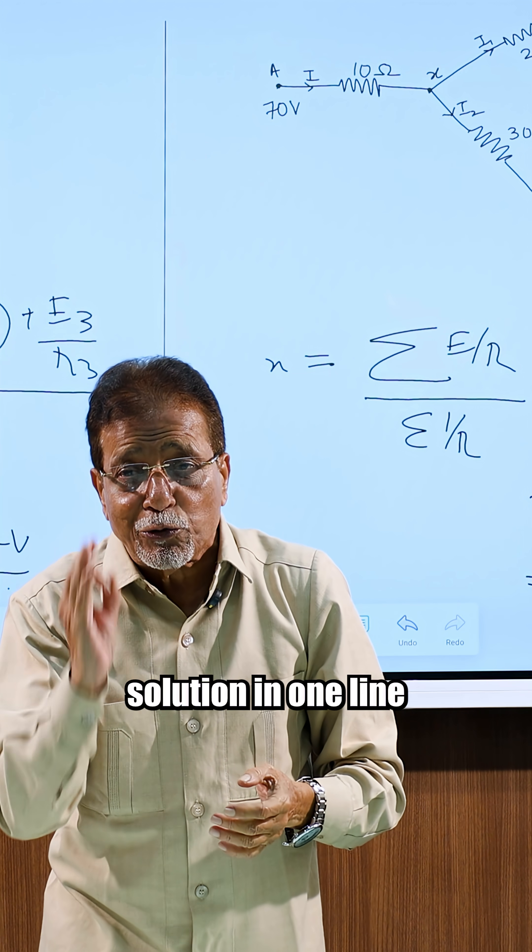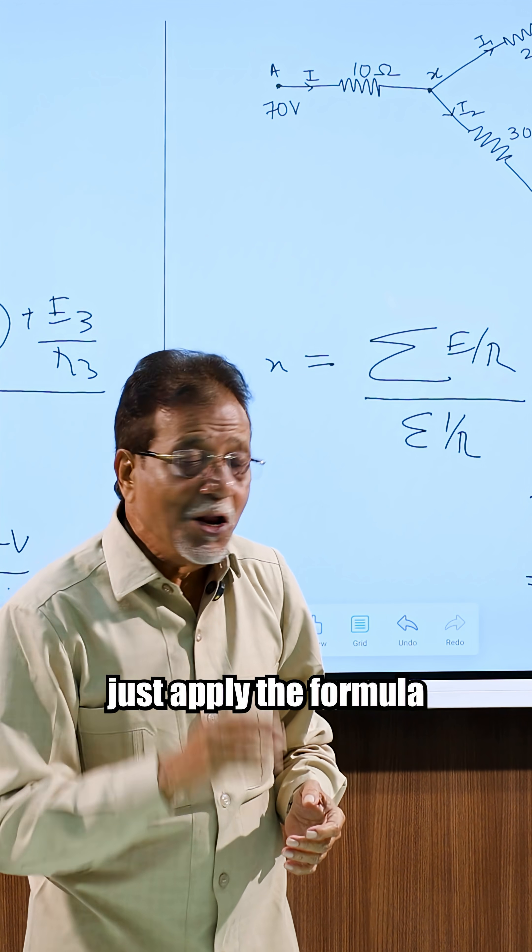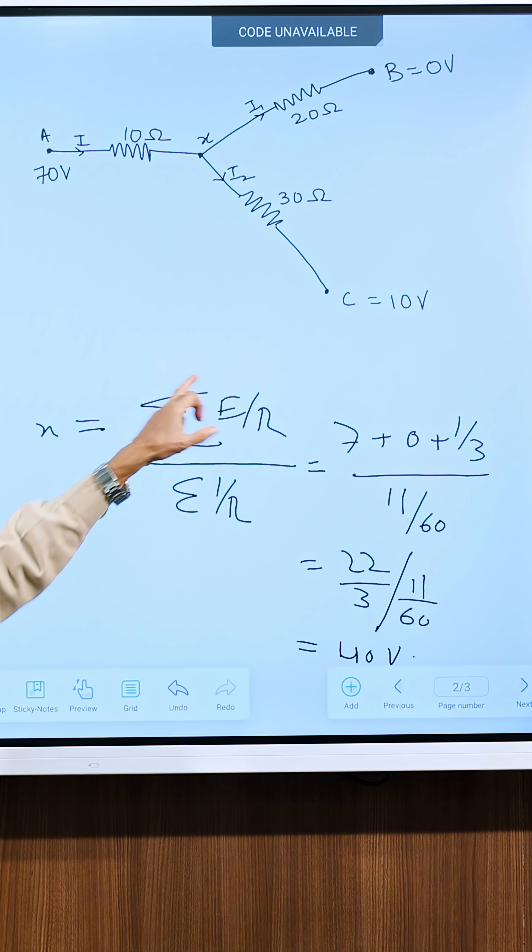I will give you a solution in one line. Just apply the formula. The potential of the junction x is equal to sigma E upon R divided by sigma 1 upon R.